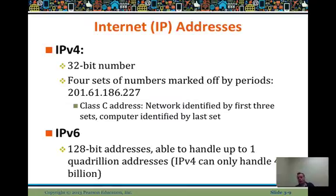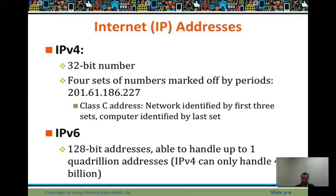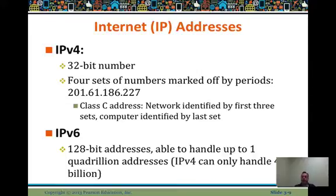The IP layer contains the internet protocol addresses. Version 4 had 32-bit addresses — you've probably seen these with your IP address — separated by dots, such as 201.61, etc. The class C address is identified by the first three sets, with the computer identified by the last set, for example .227. The big improvement with version 6 was going from a 32-bit address to a 128-bit address. IPv6 can now handle one quadrillion addresses, whereas IPv4 can only handle four billion. The number of websites and addresses needed today were significantly and exponentially improved by IPv6.